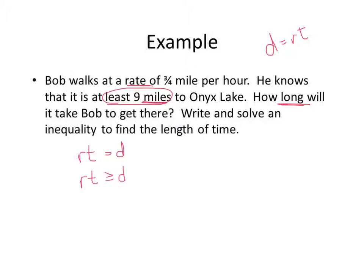If we plug in some numbers: R is 3 fourths, T is our variable because we don't know it, and that's greater than or equal to 9. If it's at least 9 miles, I need to go at least 9 miles — I could go further. There's your equation. Now solve the equation: how do we get rid of that 3 fourths in front of the T?